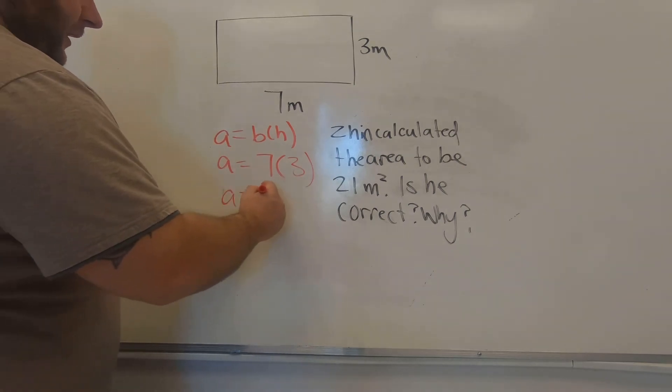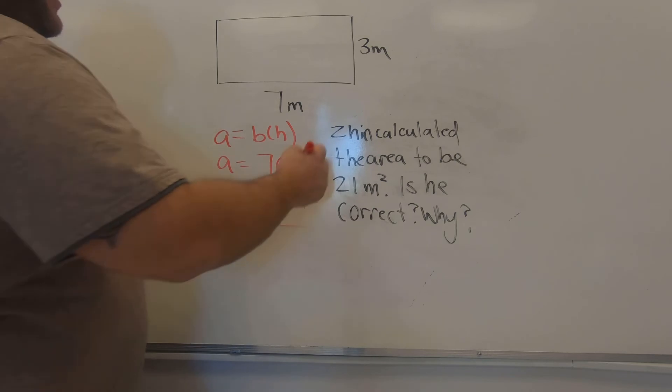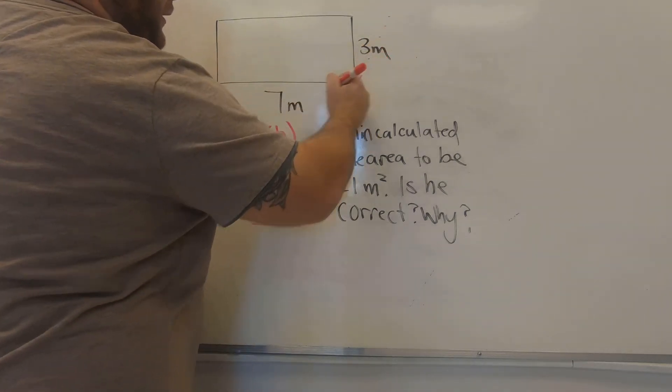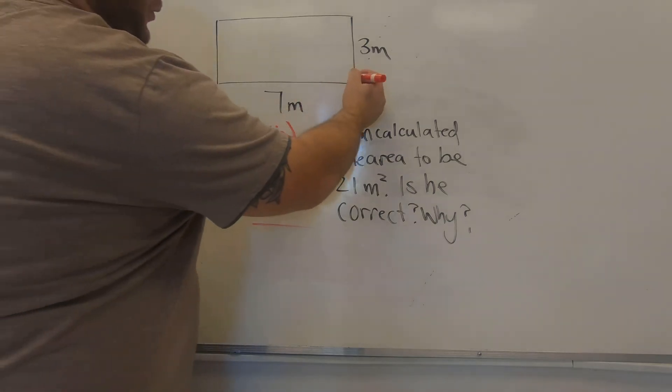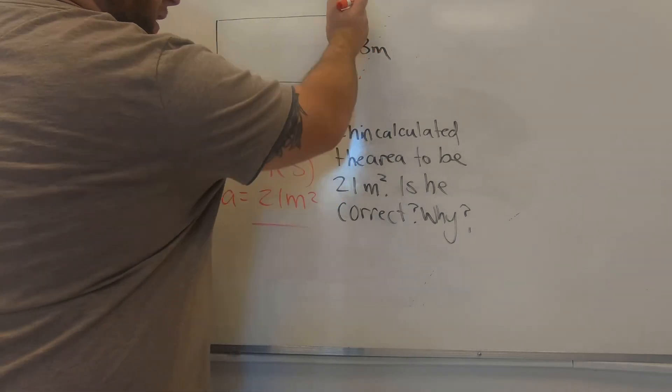And 7 times 3 is 21 meters. So Shin redeemed himself, and he is correct. Here, we're not dealing with an angled parallelogram. We're dealing with a rectangle, which means there's a 90-degree angle here. So the side length is the height.